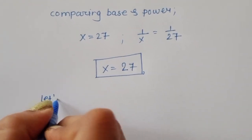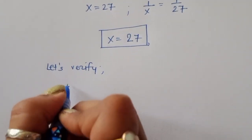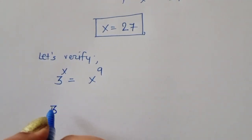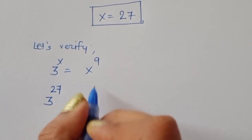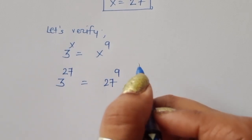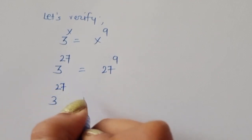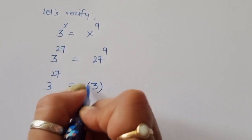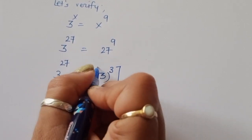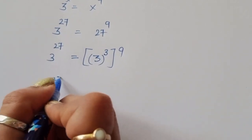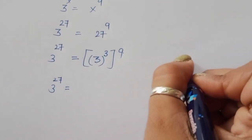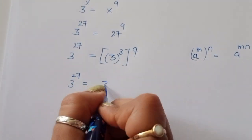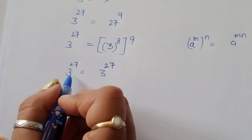Let's verify: 3 power x equals x power 9. Substituting x equals 27: 3 power 27 equals 27 power 9. Now 27 is 3 power 3, so 27 power 9 equals 3 power 3 power 9. Using the formula a power mn, this equals 3 power 27. So LHS equals RHS, which confirms our answer.